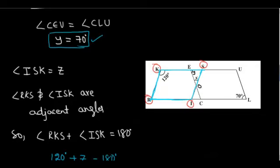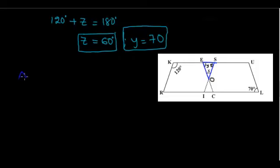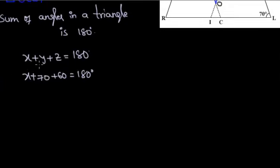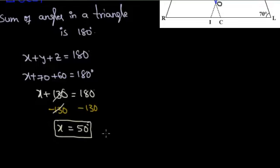We have Y equal to 70 degrees and Z equal to 60 degrees. By using these two angles, we can find out the value of X. Considering triangle OES, the sum of angles in a triangle is 180 degrees, so X plus Y plus Z equals 180 degrees. Combining 70 and 60 gives 130 degrees. So X plus 130 equals 180 degrees. Subtracting 130 from both sides, we get X equals 50 degrees.